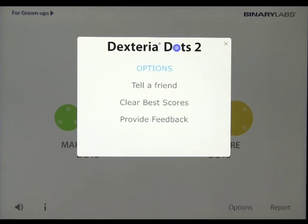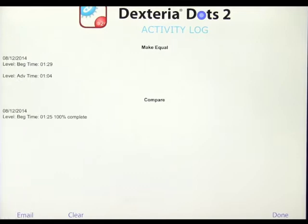Options down here, you can tell a friend, clear scores, provide feedback, and then you have the report card. You'll see on here some of the exercises that I completed earlier today. You can email those out, you can clear the scores, and you can go back.